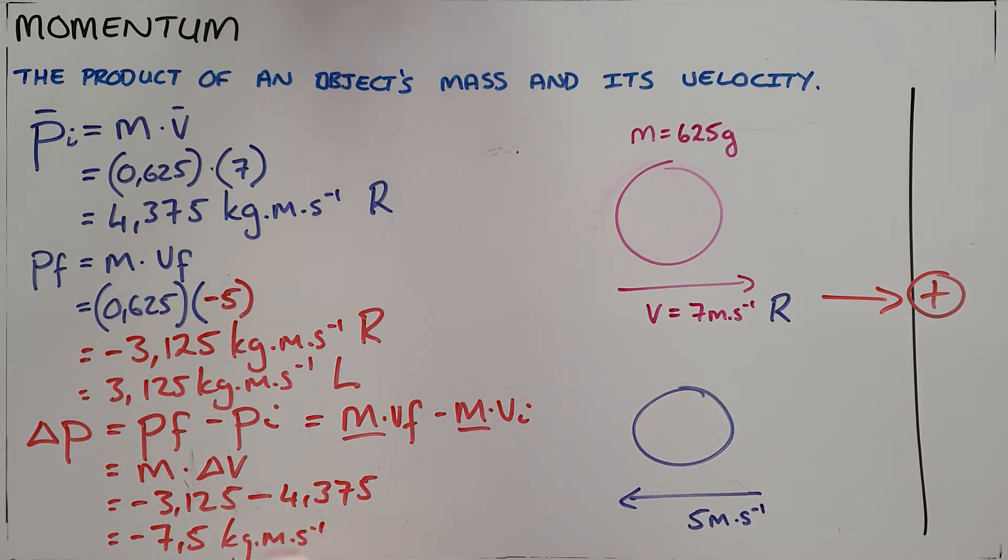And obviously that is negative value, so it's to the right. Or we can rewrite it in the positive form, 7.5 kilogram meters per second to the left.